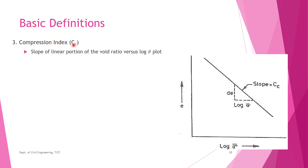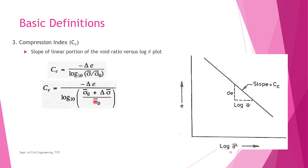The next important term is compression index, Cc. It is the slope of the linear portion of the void ratio versus log σ̄ plot. Since the log σ̄ versus e plot gives a straight line, the slope of that straight line is the compression index. The equation is: Cc = −Δe / log₁₀(σ̄ / σ̄₀), where σ̄ is the final effective stress and σ̄₀ is the initial effective stress. It can also be written as: Cc = −Δe / log₁₀((σ̄₀ + Δσ̄) / σ̄₀).